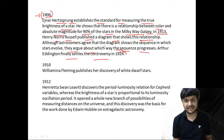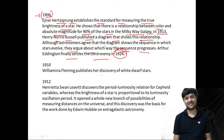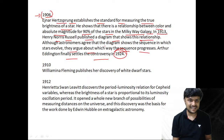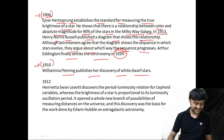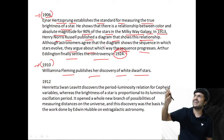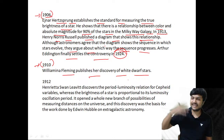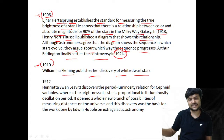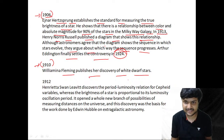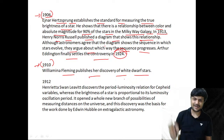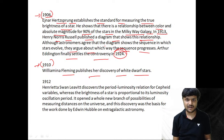In 1910, Williamina Fleming publishes her discovery of white dwarf stars. Chandrasekhar established that massive stars die as black holes, while stars with mass less than 1.4 solar masses die as white dwarfs. The first observational discovery of a white dwarf was published in 1910 by Fleming.